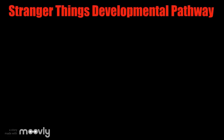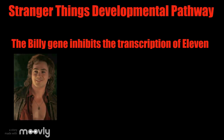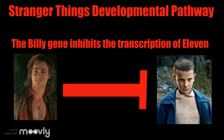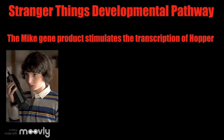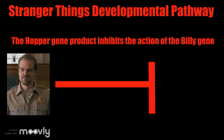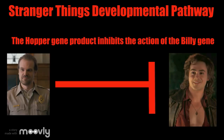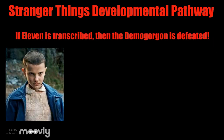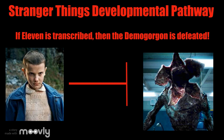For this pathway, the Billy gene inhibits the transcription of 11. The Mike gene product stimulates the transcription of Hopper. The Hopper gene product inhibits the action of the Billy gene, and if 11 is transcribed then the demogorgon is defeated.